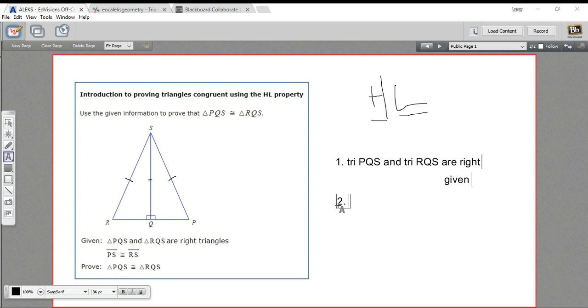Next step, we need a hypotenuse that's congruent and a leg that's congruent. Well, the hypotenuse here being congruent is just part of the given information. So we can say PS is congruent to RS because of given.